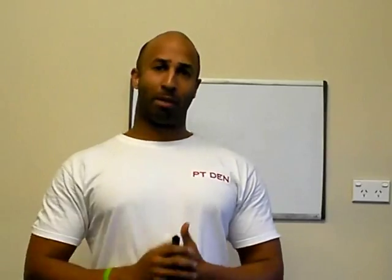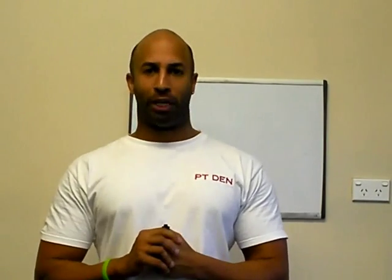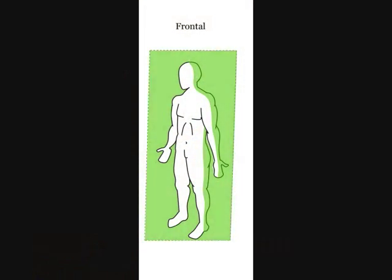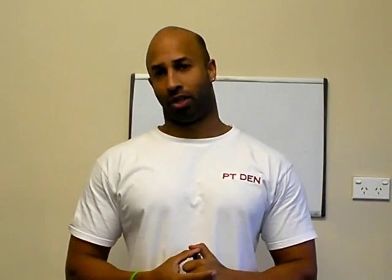The first plane I'm going to be talking about is called the frontal plane. As you've just seen in the picture, the frontal plane runs along the side of the body, separating the body from the front to the back. Exercises that run along the frontal plane include exercises such as the delt fly. Other exercises also include things of the hips such as adduction and abduction.